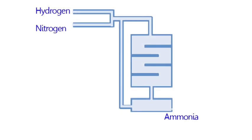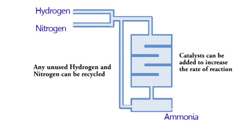The feedstocks are combined together to create ammonia in the reacting vessel and the unused feedstock is recycled back around to increase the yield. A catalyst can also be used to help speed up the rate of reaction.